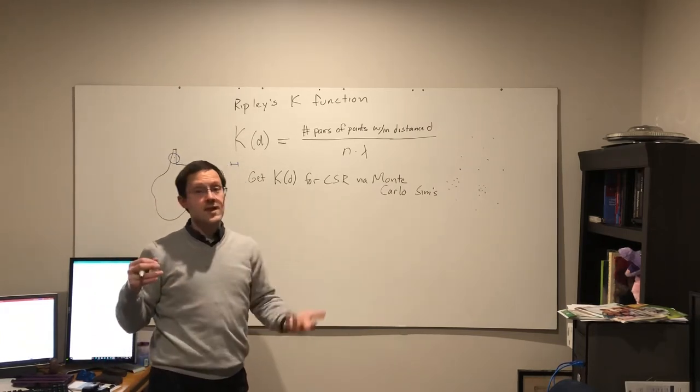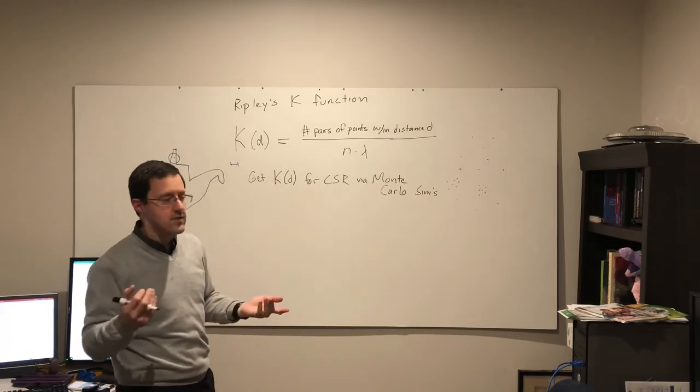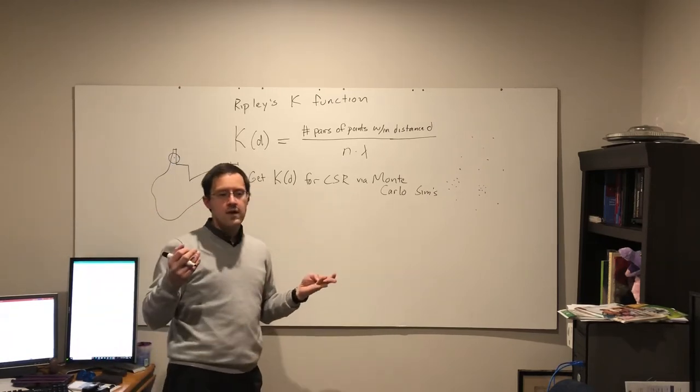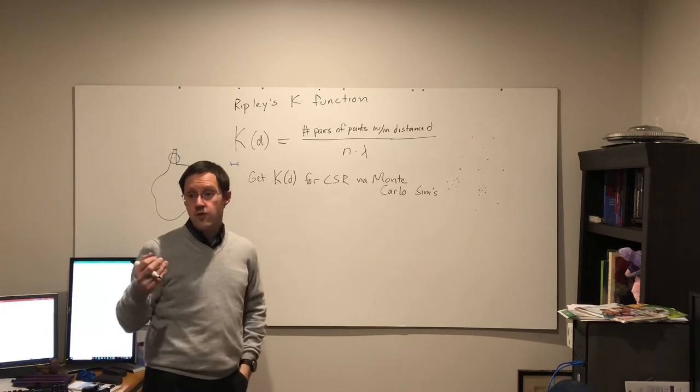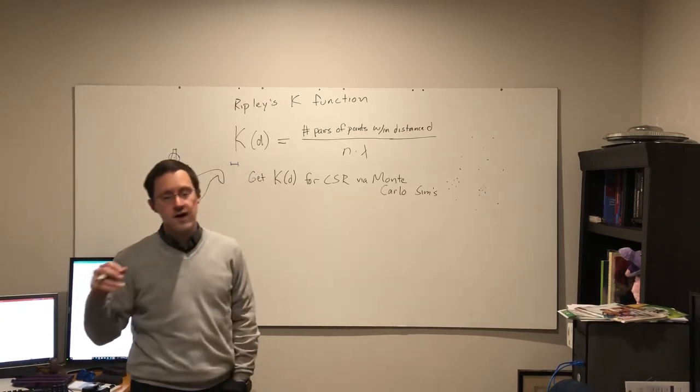And I calculate the K function. And I do that many many many times. 999 is a fairly common one, although within ArcGIS that will cause it to run a very long time.